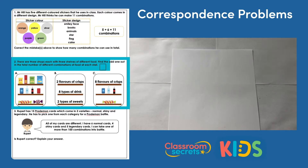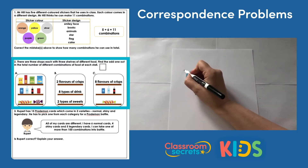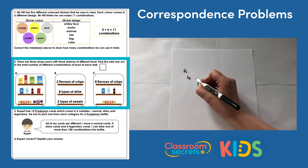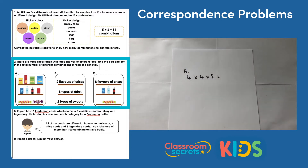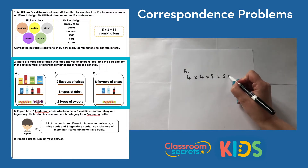Question two: there are three shops, each with three shelves of different food. Find the odd one out in the total number of different combinations of each food stall. We're looking at all the possibilities for finding different combinations of objects. Starting with shop A: on their top shelf they have four combinations of crisps, then four combinations of drink, and two combinations of sweets. So our calculation is 4 times 4 is 16, and 16 times 2 is 32 — so there are 32 combinations.